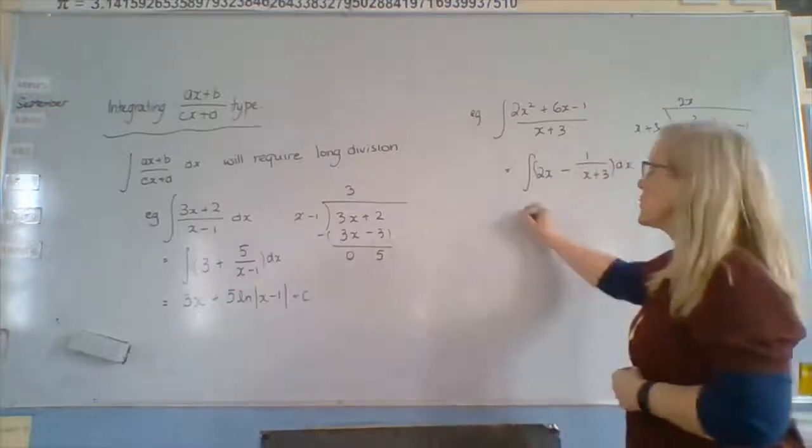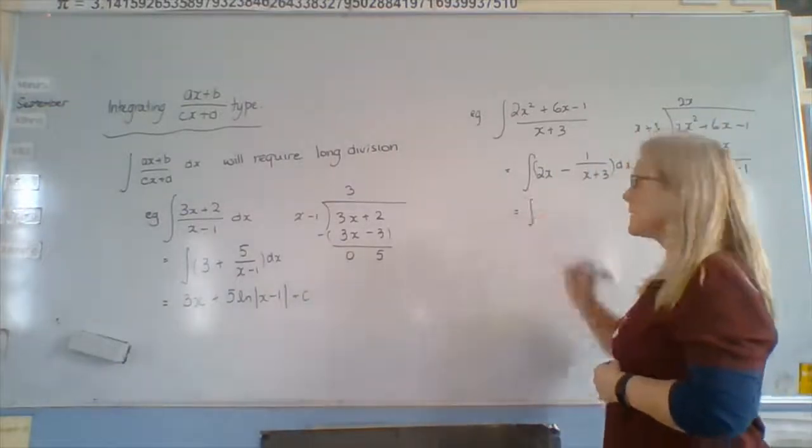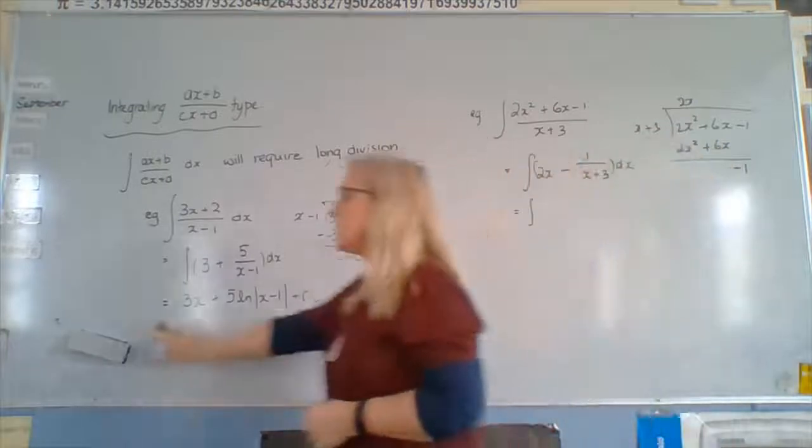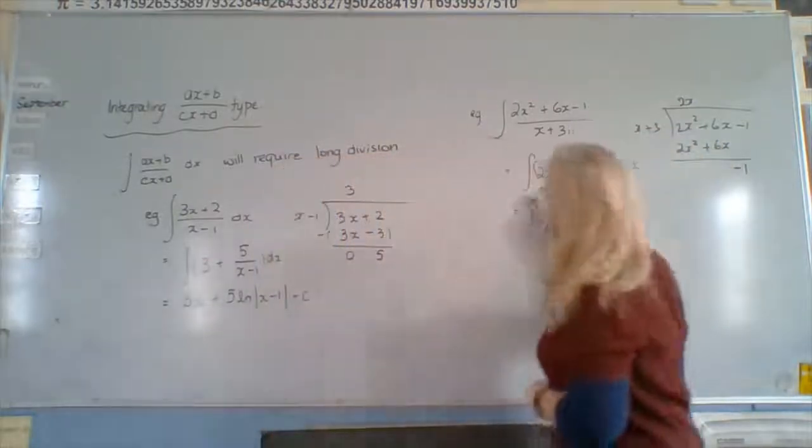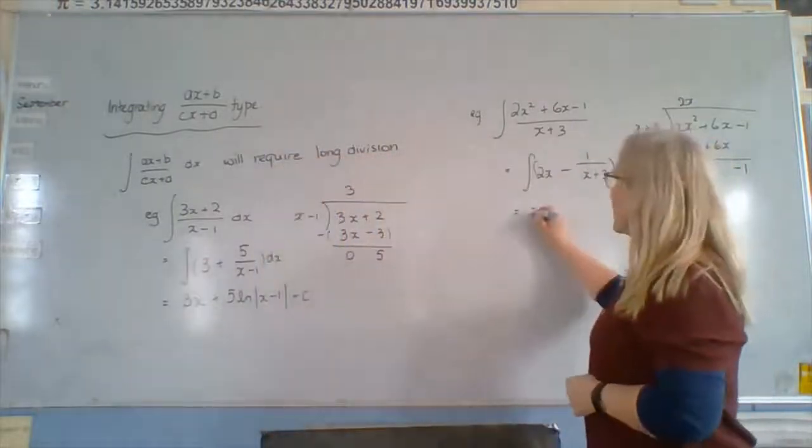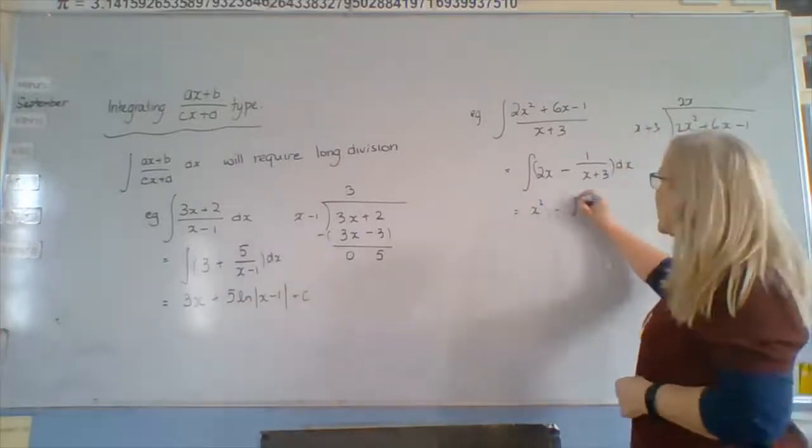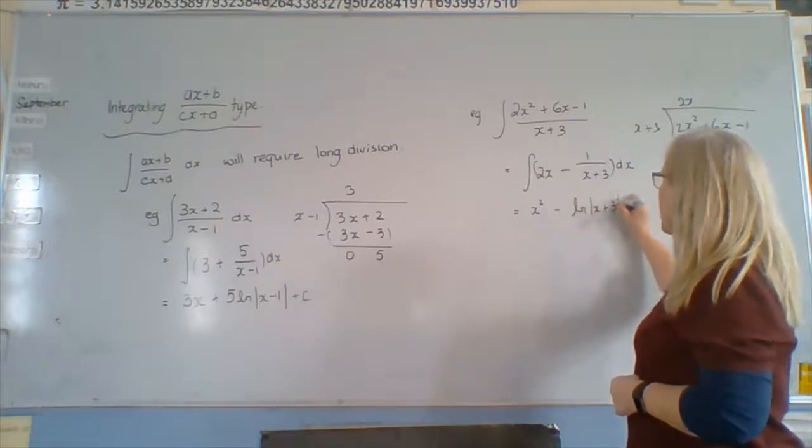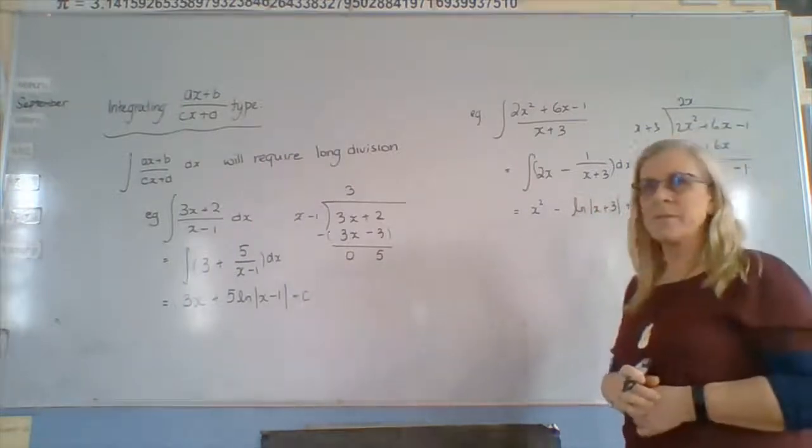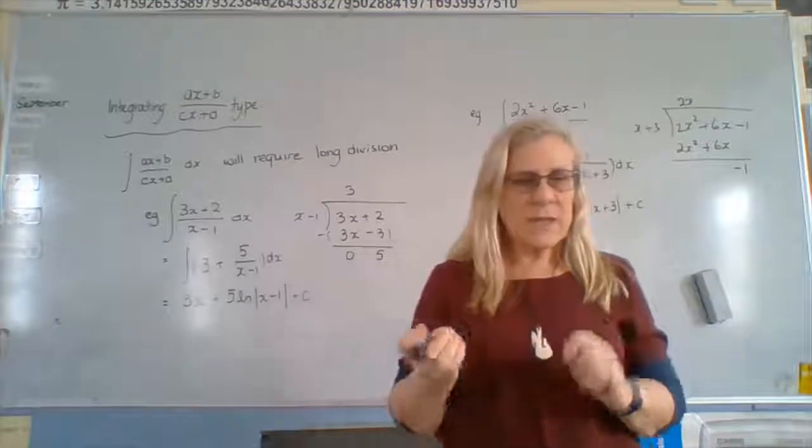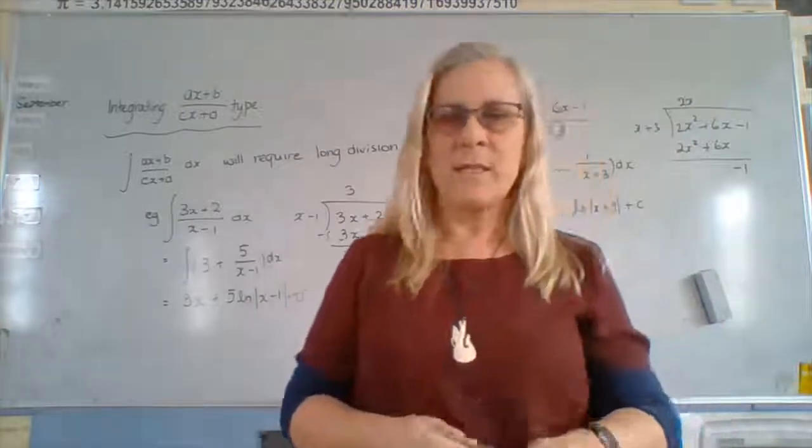So integrating 2x, we get... oh, integrating it, so we don't have the integral sign anymore. What do we get? x squared divided by 2, which cancels with the 2. And for this one, ln of x plus 3 plus c. All right. So the tricky thing here is rewriting it.